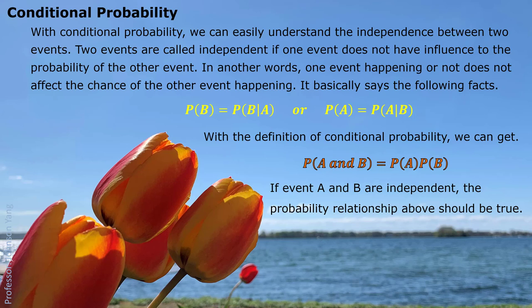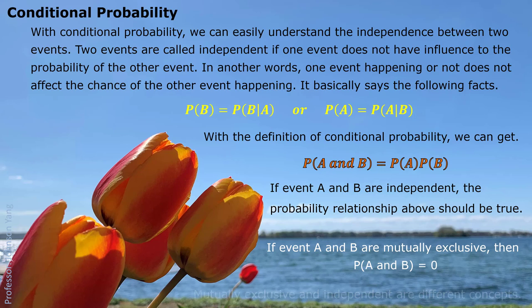You may recall another concept — mutually exclusive. We say events A and B are mutually exclusive if A and B cannot happen together, which means P(A and B) equals zero. Do not get these two concepts confused: mutually exclusive and independent are totally different. Mutually exclusive only concerns whether events can happen together. Independence is based on whether they influence the chance of each other happening.